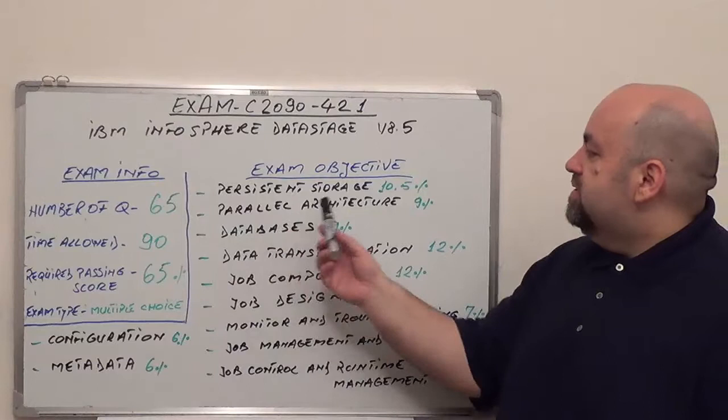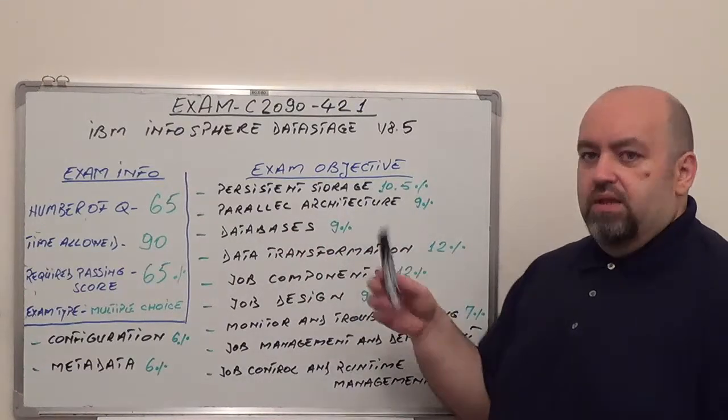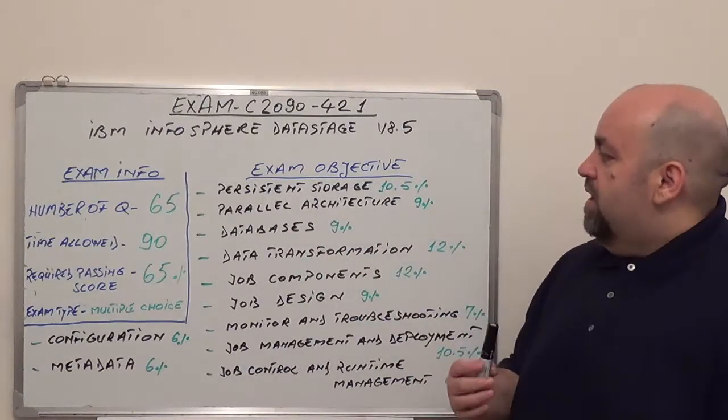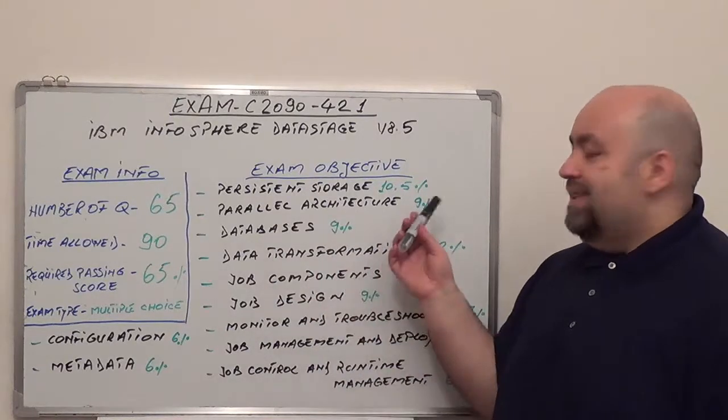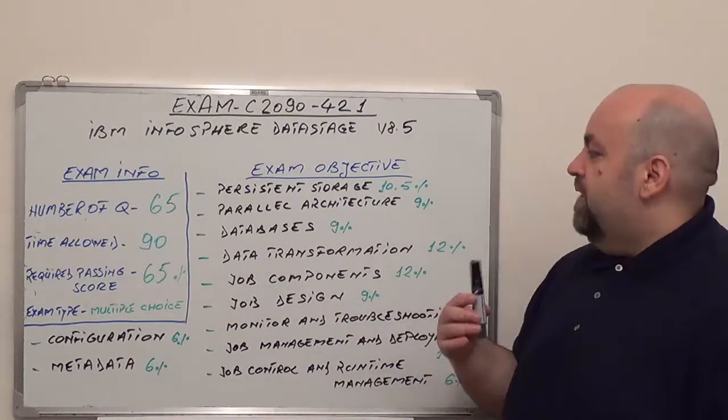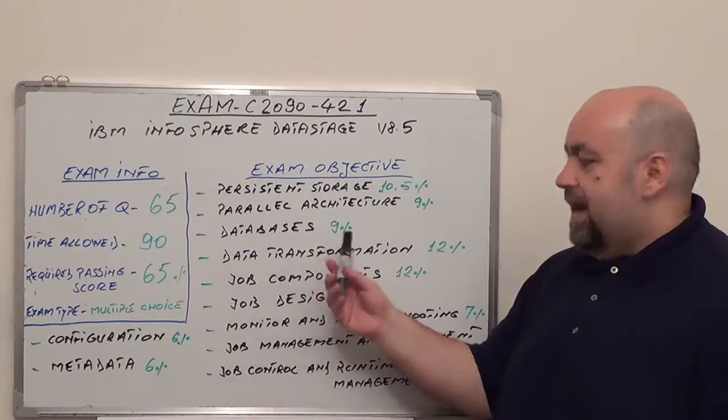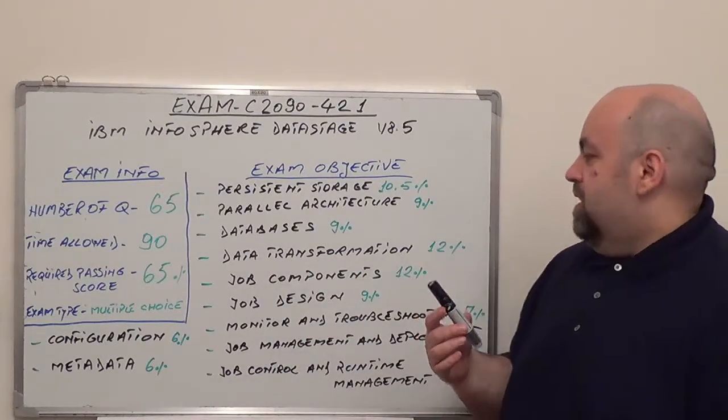Third one is persistent storage, 10.5% from total operation. Next is going to be parallel architecture with 9% from total operation. Following by databases, 9% from total operation.